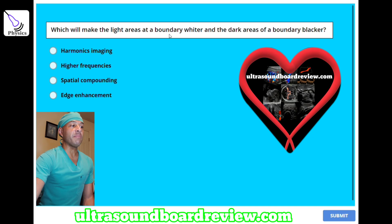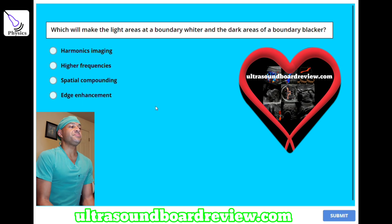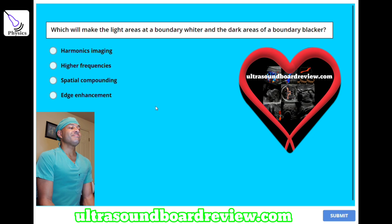Which will make the light areas at a boundary wider and the dark areas of a boundary blacker? A. Harmonics imaging, B. Higher frequencies, C. Spatial compounding, or D. Edge enhancement? The answer is D. Edge enhancement.